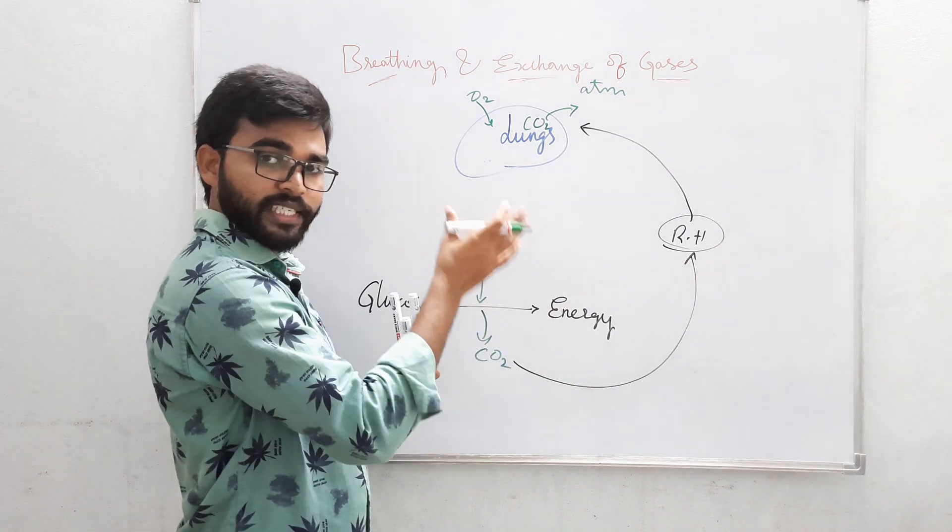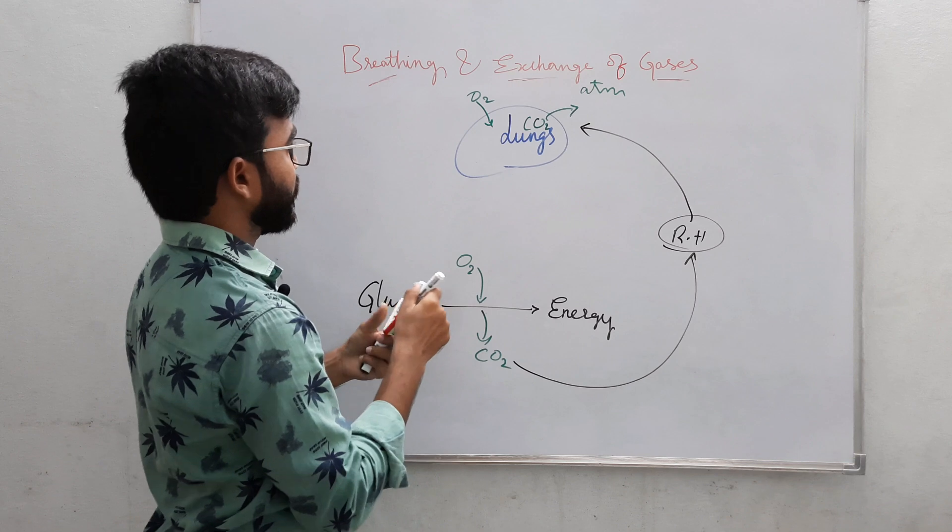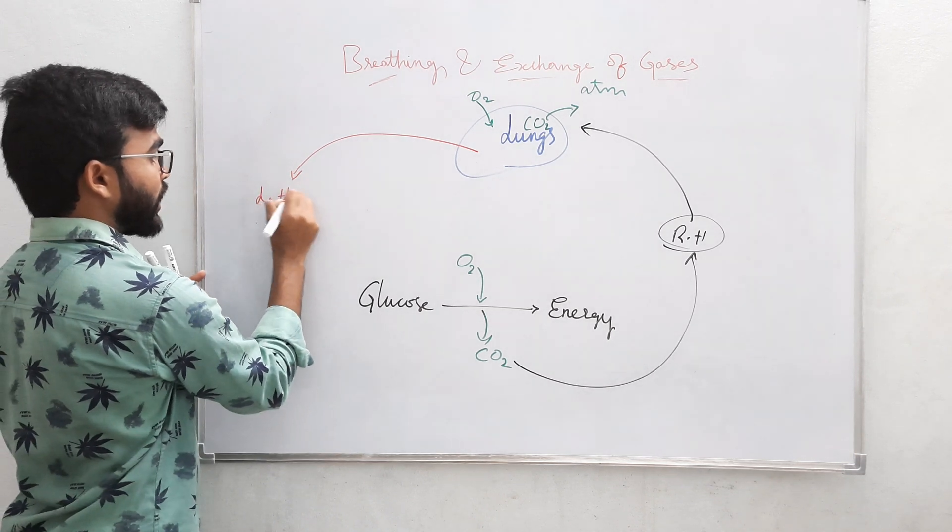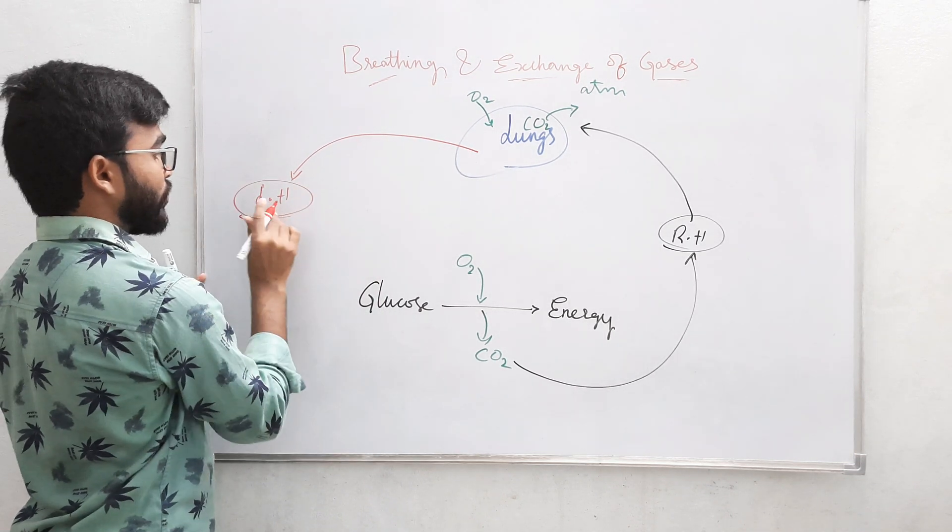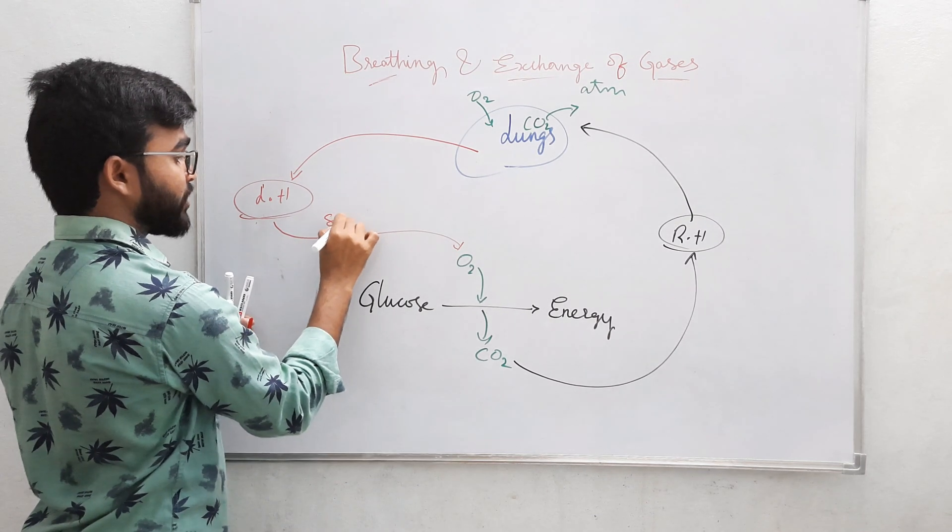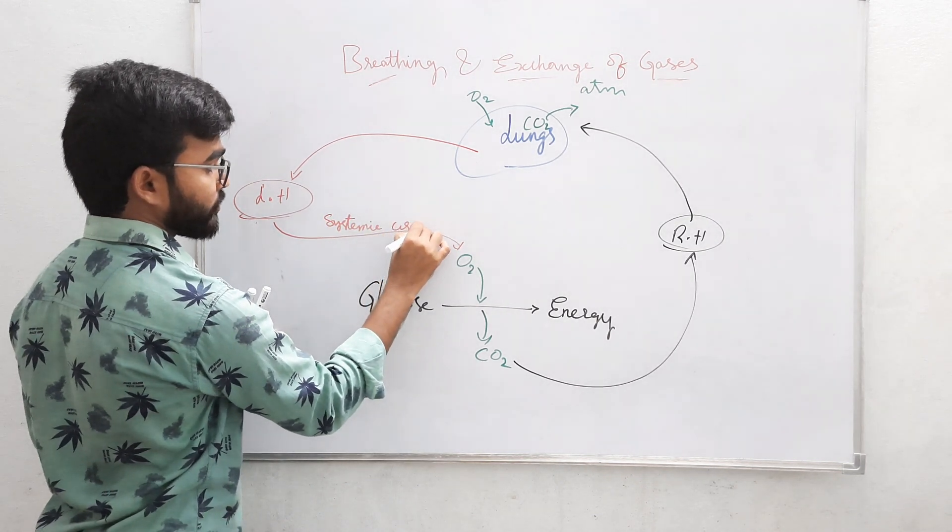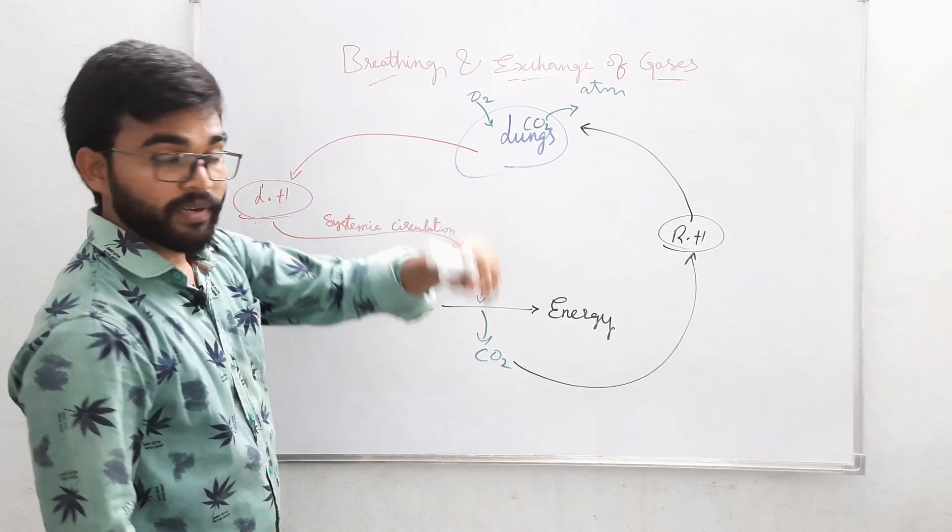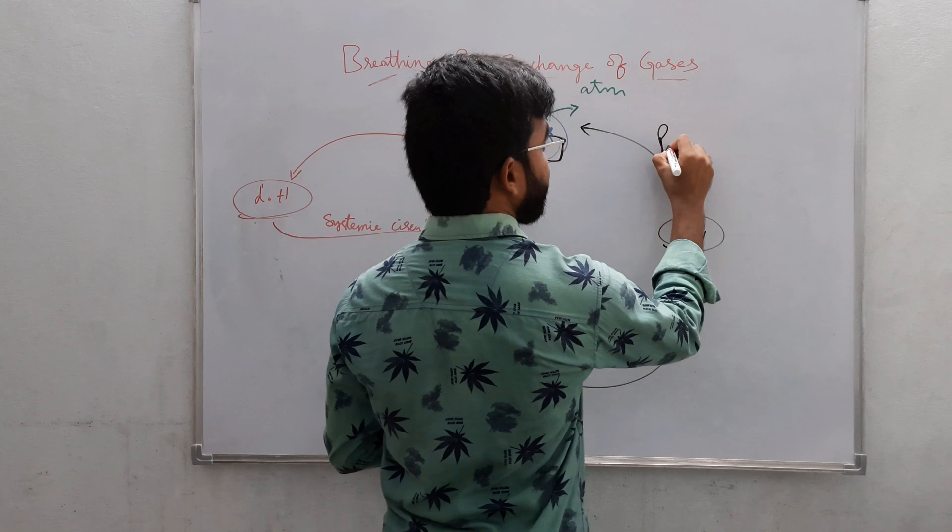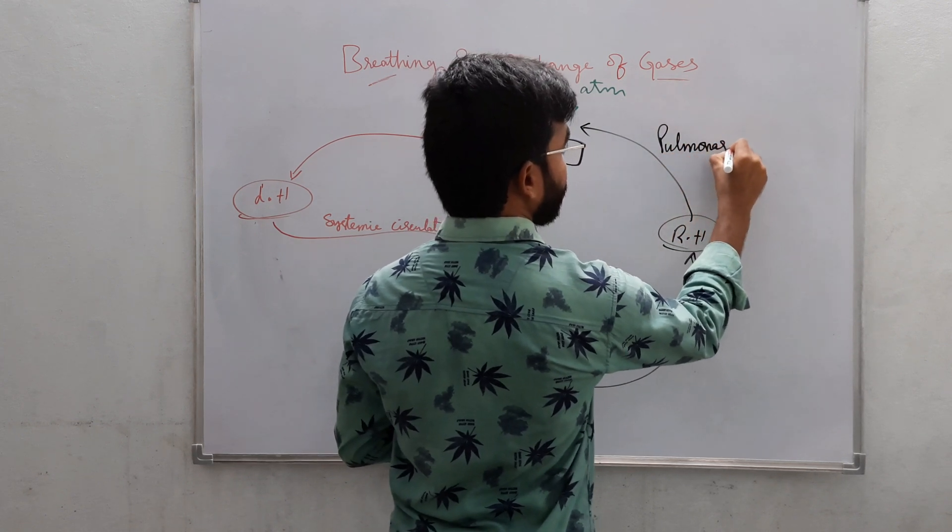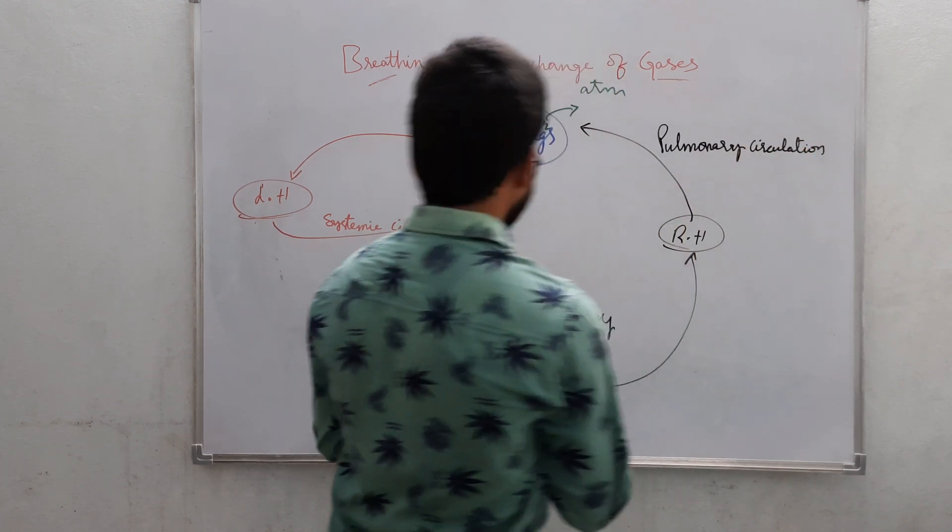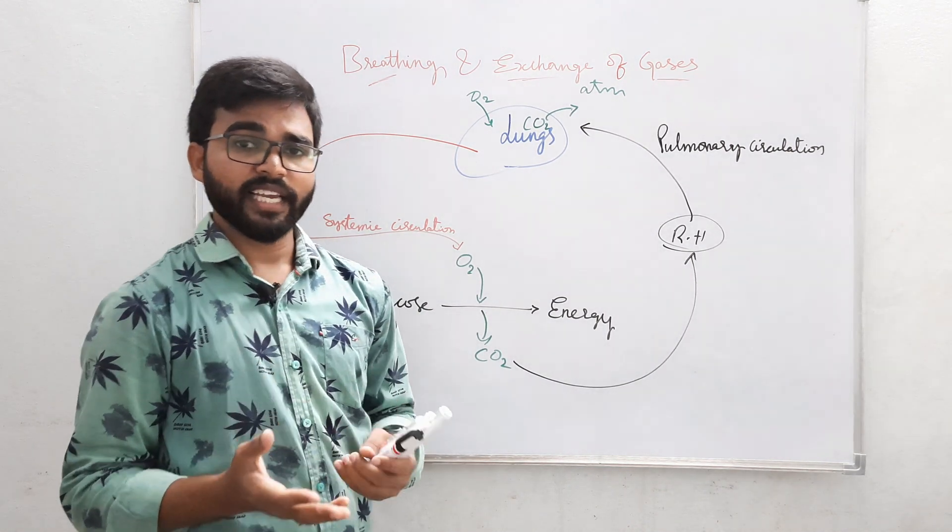After this, the oxygenated blood will be given to the left side of the heart from lungs. From here, the oxygenated blood will be supplied to the tissues by the systemic circulation.